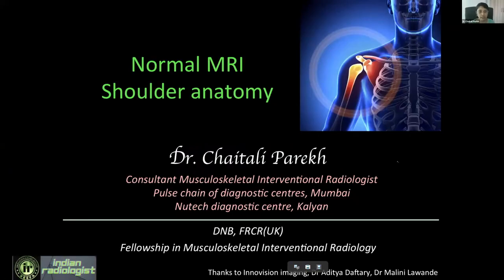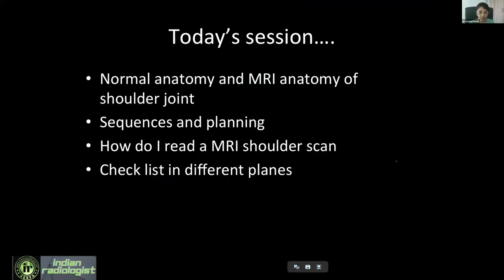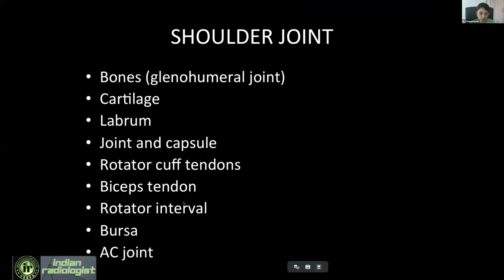Today we are discussing normal MRI anatomy of the shoulder. In today's session, we'll be discussing the normal anatomy and MRI anatomy of the shoulder joint, the sequences and planning for any MRI shoulder, how to read an MRI shoulder scan, and the checklist in different planes. These are the normal structures that we need to look at, and we'll be covering each one of them over the next 15 to 20 minutes.